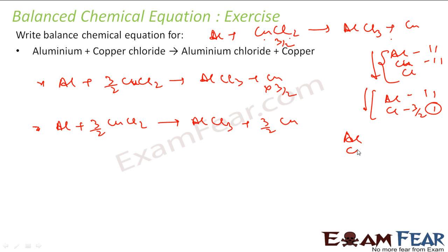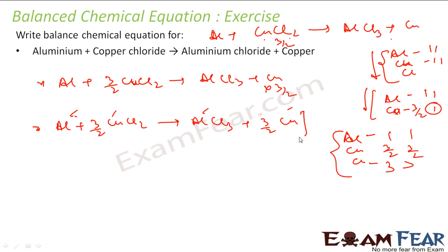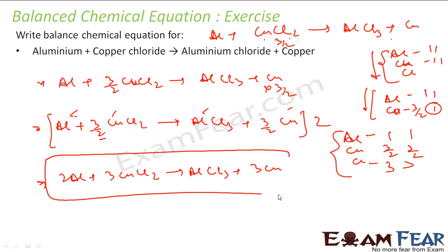Let us again check: aluminium is 1 and 1 — balanced. Copper is 3/2 and 3/2 — balanced. Chlorine: 3/2 × 2 = 3 here, and 3 here — balanced. But since we have fractions with denominator 2, we multiply everything by 2. What you get is: 2Al plus 3CuCl₂ gives 2AlCl₃ plus 3Cu. And that is my balanced equation.